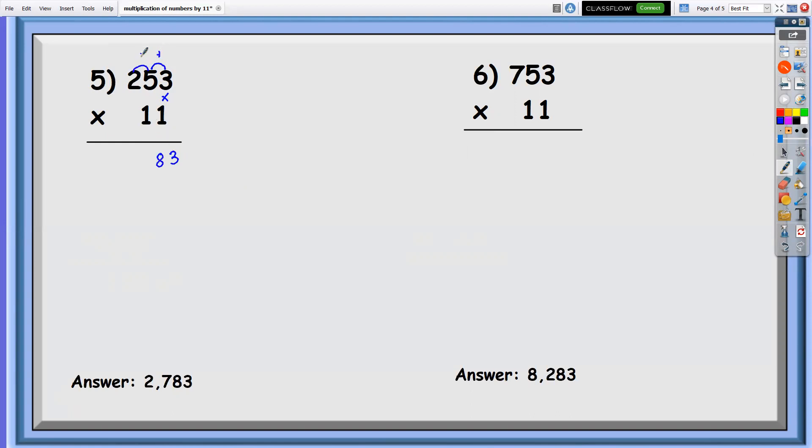And then you're going to add this as well. That will be seven. And then multiply this. Two times one, it's two. Therefore, the answer is 2,783.